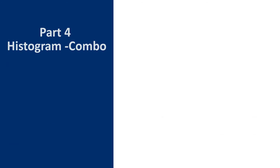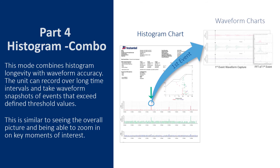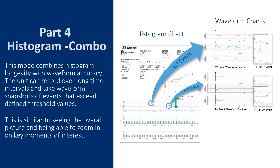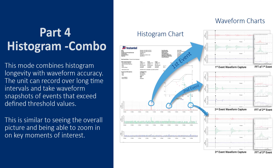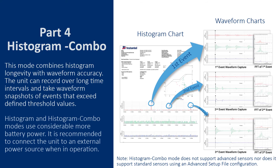The fourth record mode is Histogram Combo. This mode combines histogram longevity with waveform accuracy — the unit can record over long time intervals and take waveform snapshots of events that exceed defined threshold values. This is similar to seeing the overall picture and being able to zoom in on key moments of interest. Note that Histogram and Histogram Combo modes use considerably more battery power; it is recommended to connect the unit to an external power source when in operation.